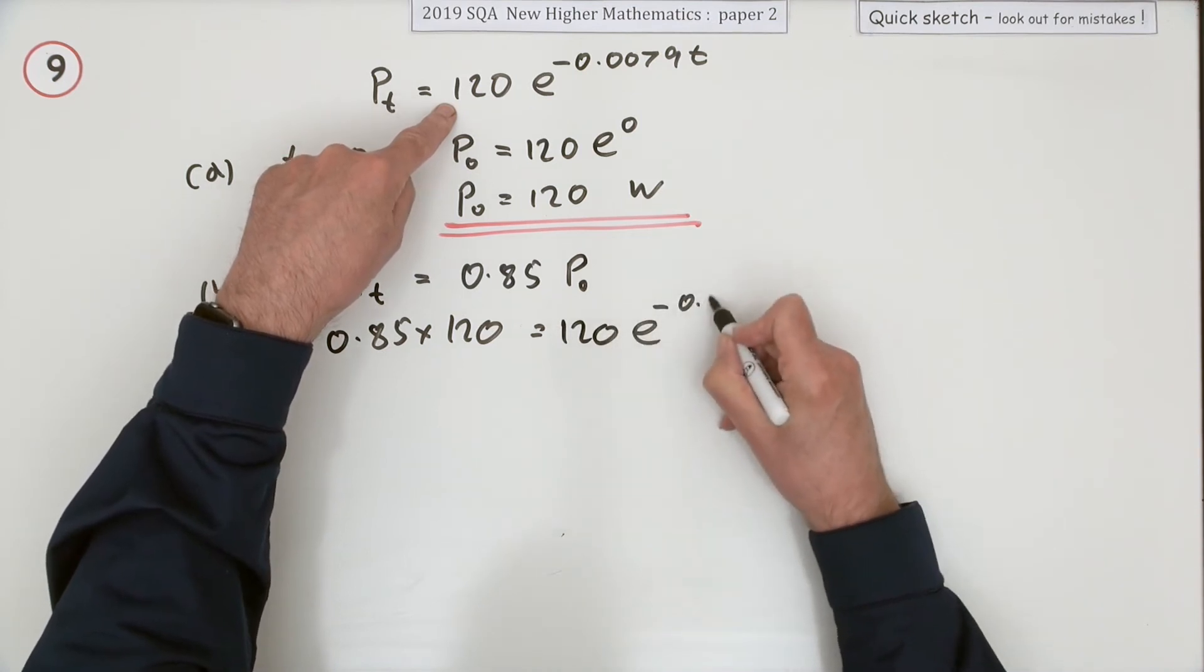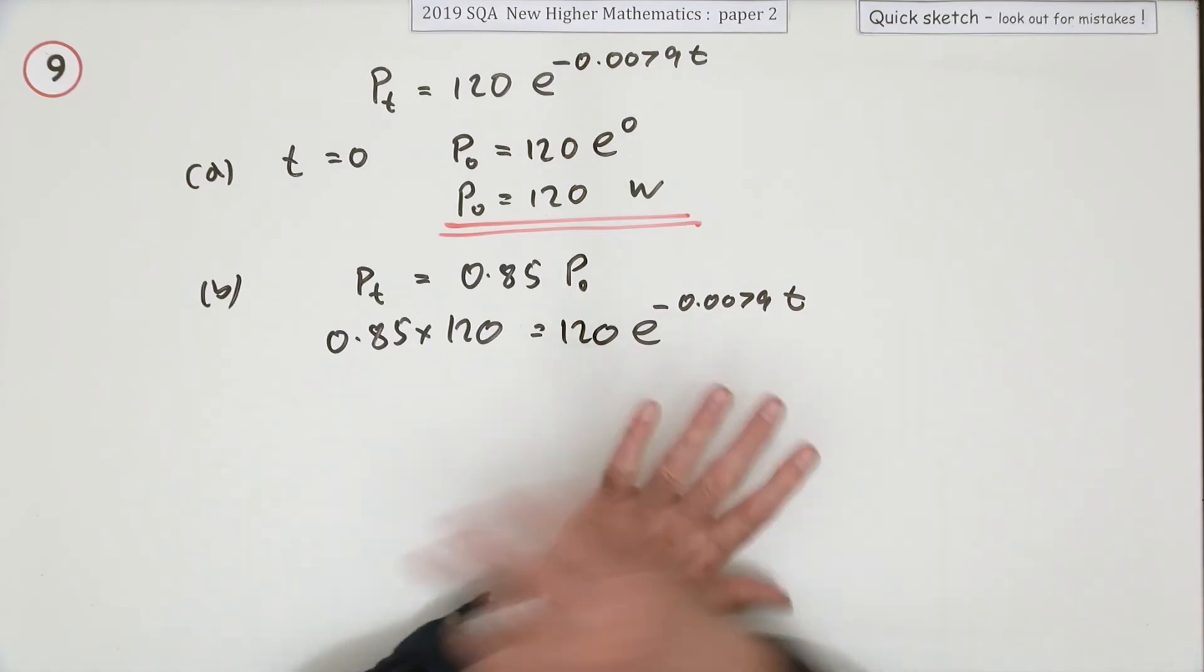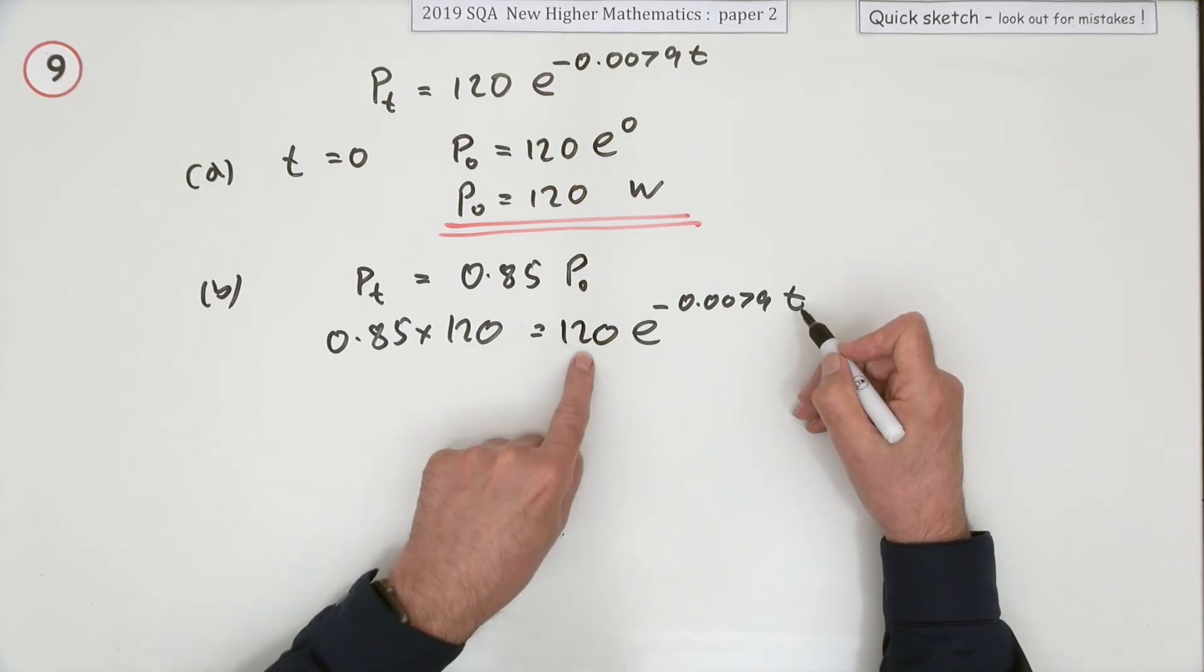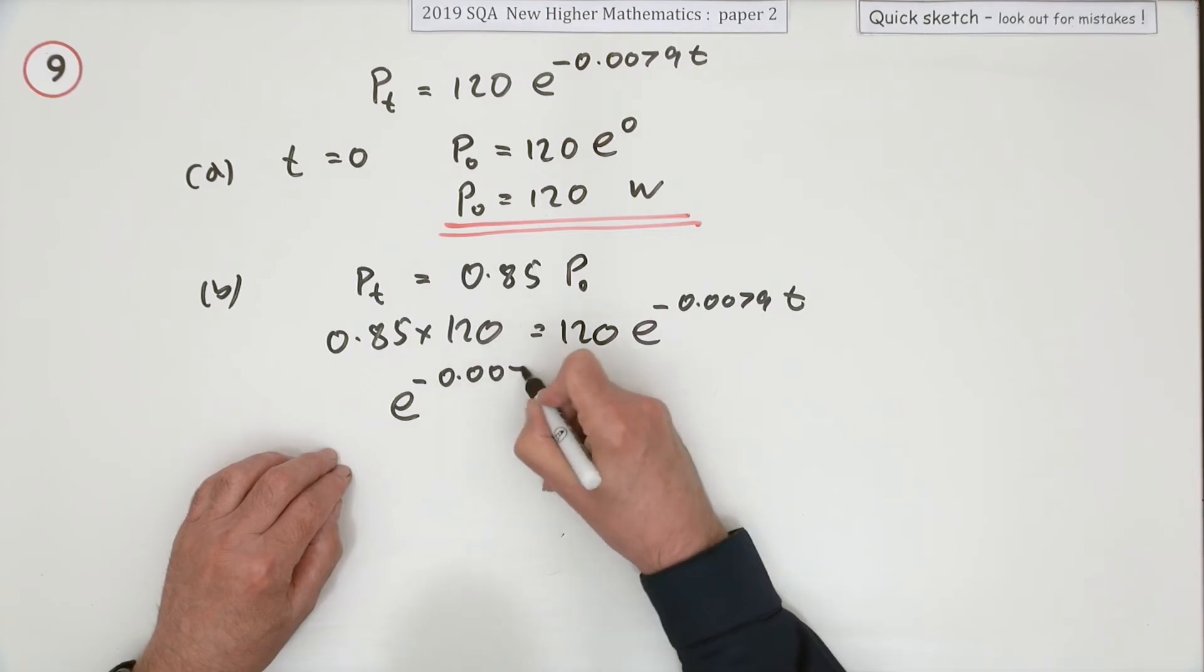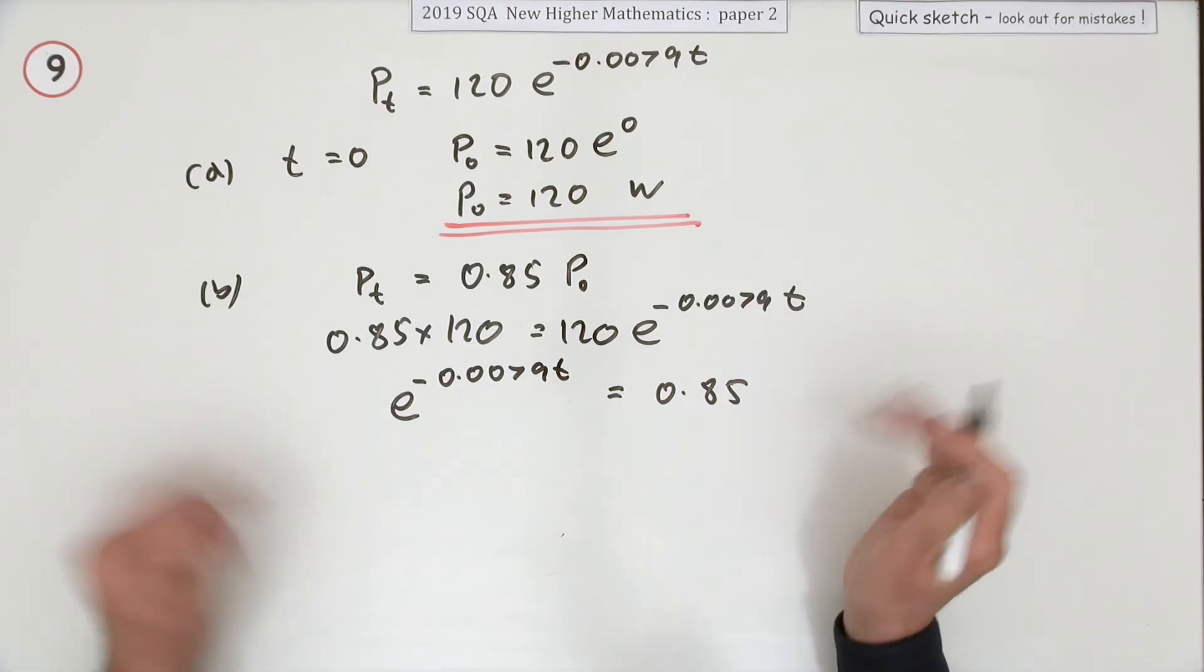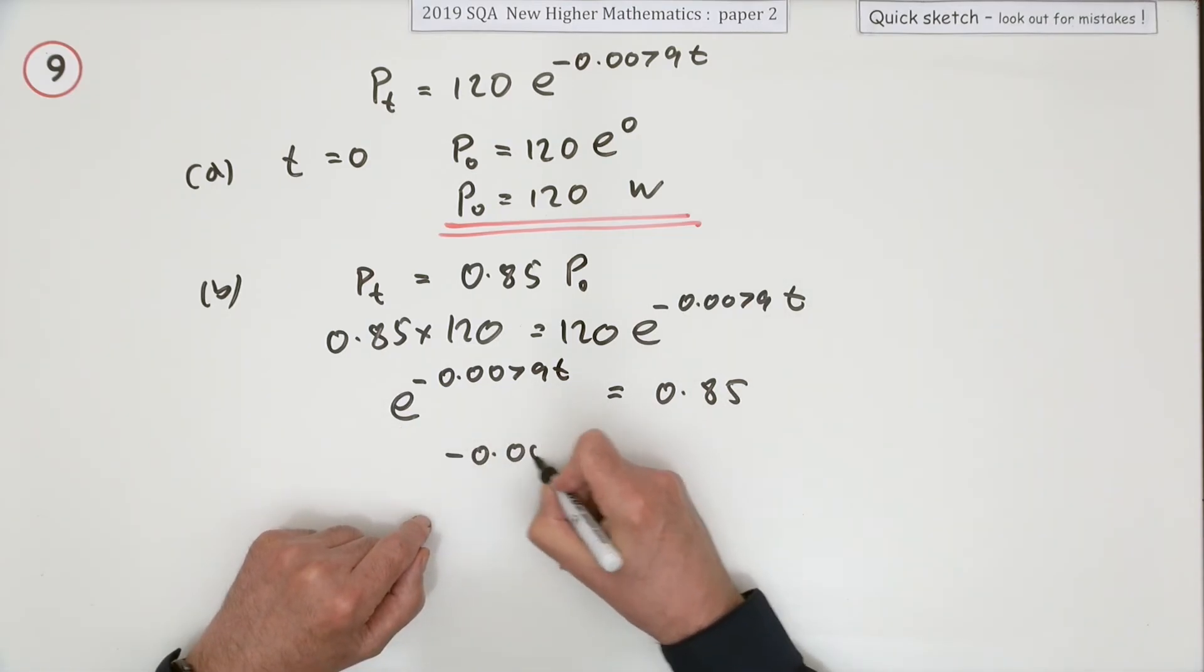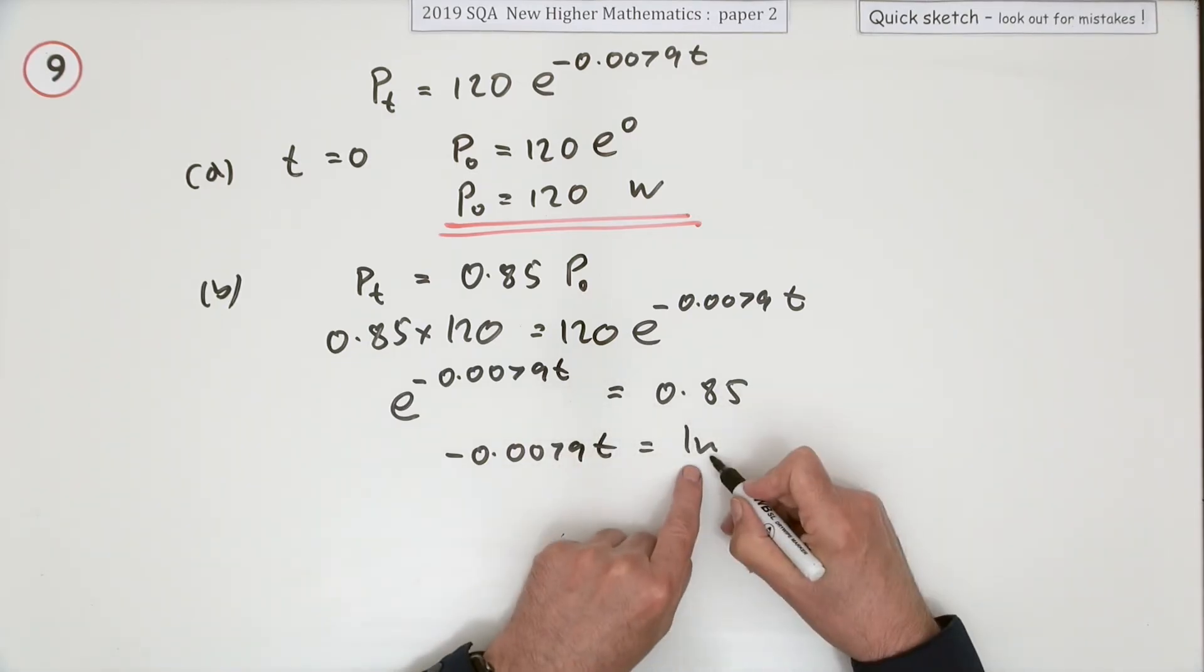The 120s cancel out, which reduces it to e^(-0.0079t) = 0.85, which maybe you could have stated straight away. The inverse: -0.0079t = ln(0.85). So t will be ln(0.85) divided by -0.0079.